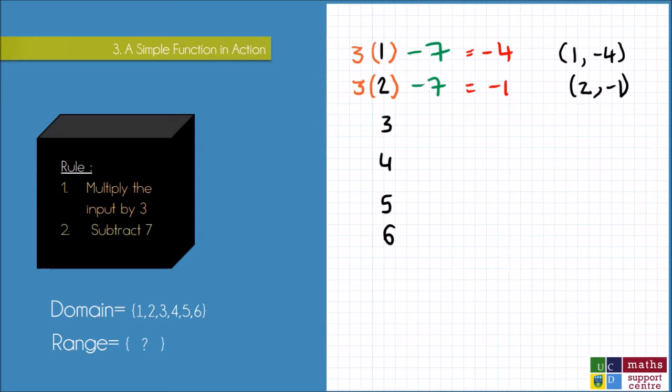Then I apply the same rule to the 3 now, 3 by 3, take away 7, so 3 by 3 is 9, take away 7, gives me 2, and my pair is 3, 2, and I do the same to all of my inputs.